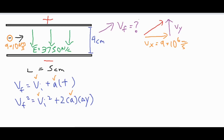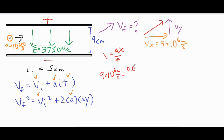Finding time is going to be a little bit easier because we can find it using the x variables. In the x direction, velocity equals delta x over t. We know the velocity is 9 times 10 to the 6th meters per second, and the delta x is the length of the plate — 5 centimeters — which converts to 0.05 meters. We cross-multiply and solve for time.